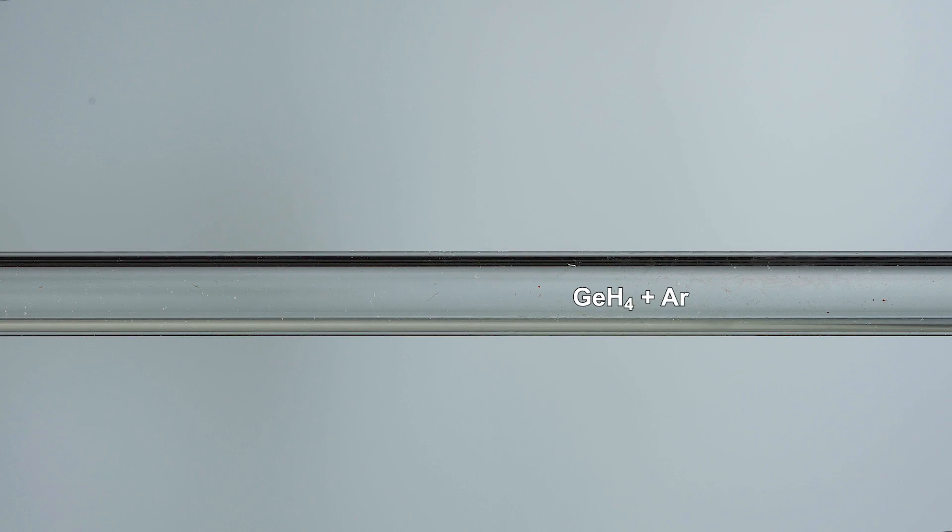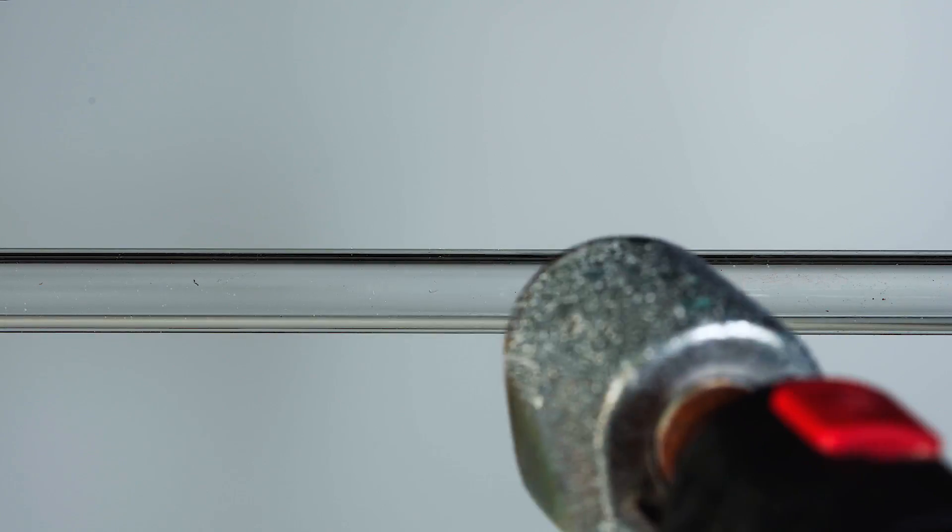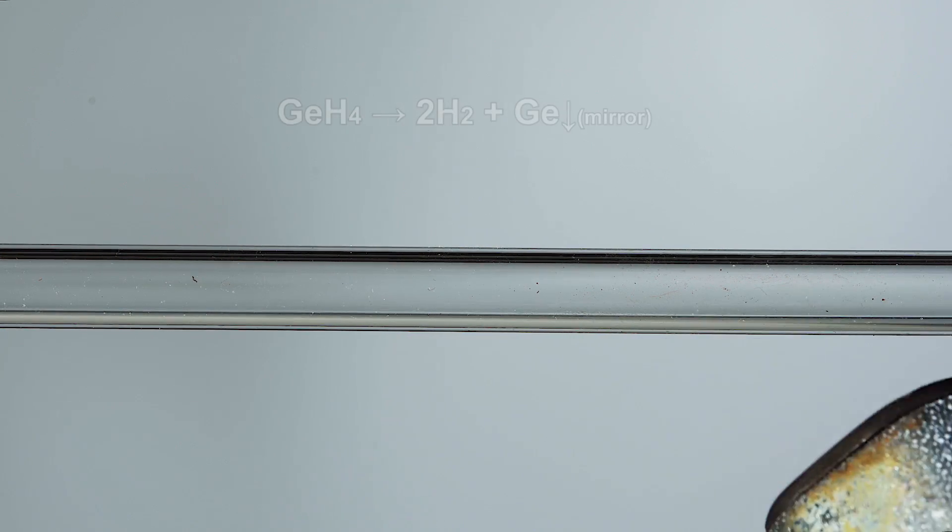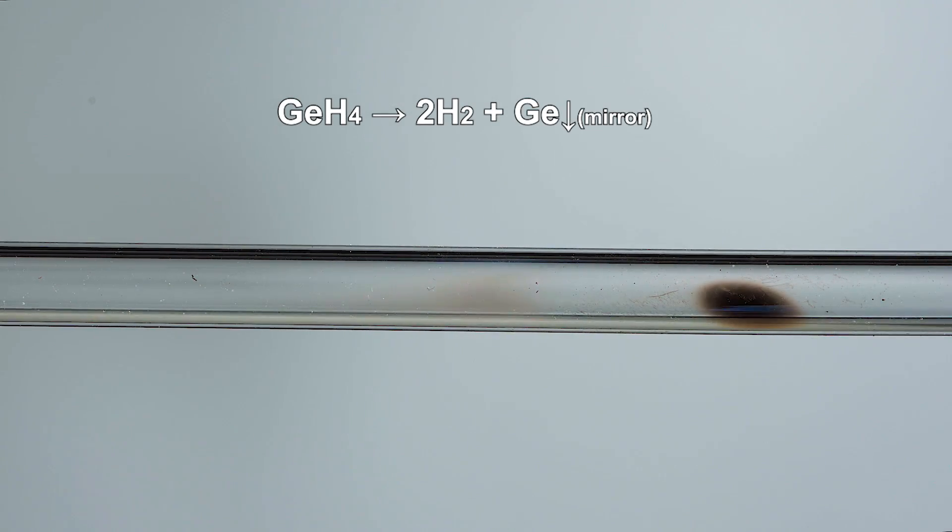And now it's time for the most interesting reaction, that is the germane decomposition reaction in a glass tube with the formation of germanium mirror. When the temperature in the tube starts to exceed 300 degrees Celsius, we'll be able to see germanium mirror forming.